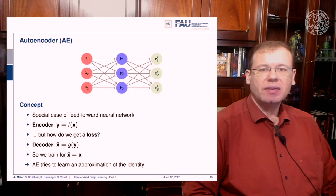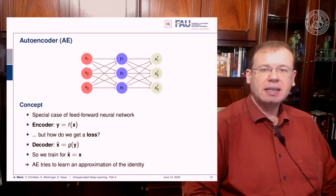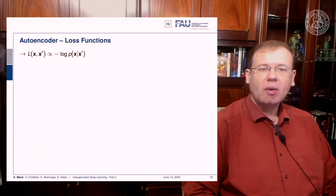Well, that sounds rather simple, and to be honest, if we have exactly the same number of nodes in the input and in the hidden layer for y here, then the easiest solution would probably be the identity. So why is this useful at all?